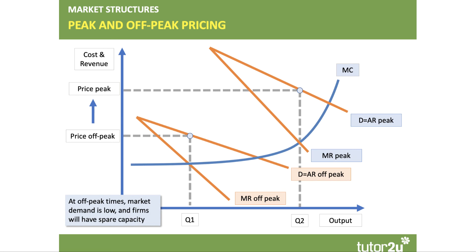Peak and off-peak pricing — for example at leisure centres, ski resorts, theme parks, or zoos — is a great example. Demand at off-peak times tends to be low and fairly elastic; firms have lots of spare capacity so they charge a lower price. At peak times, demand becomes more inelastic, demand is higher, people are willing to pay more, and firms charge a much higher price. Peak and off-peak is a great second-degree price discrimination strategy to be aware of.